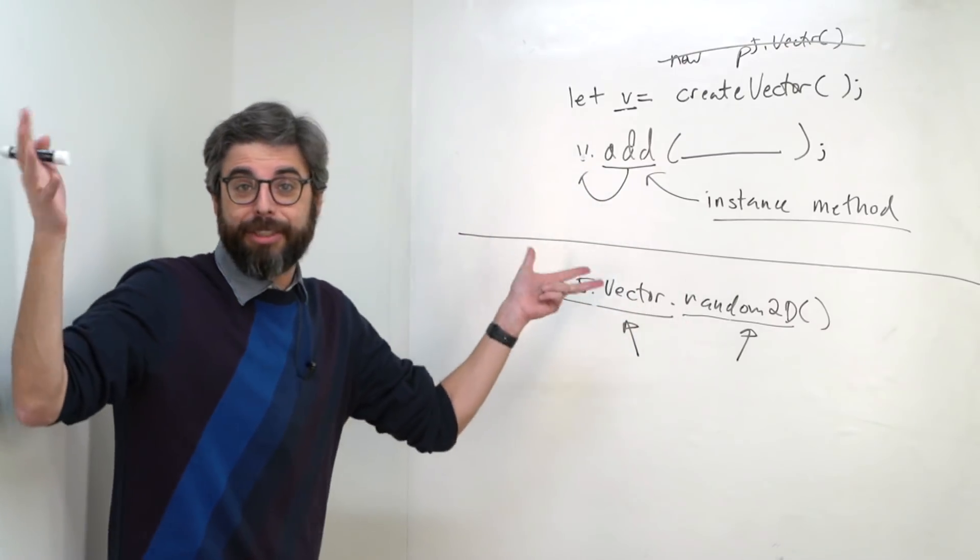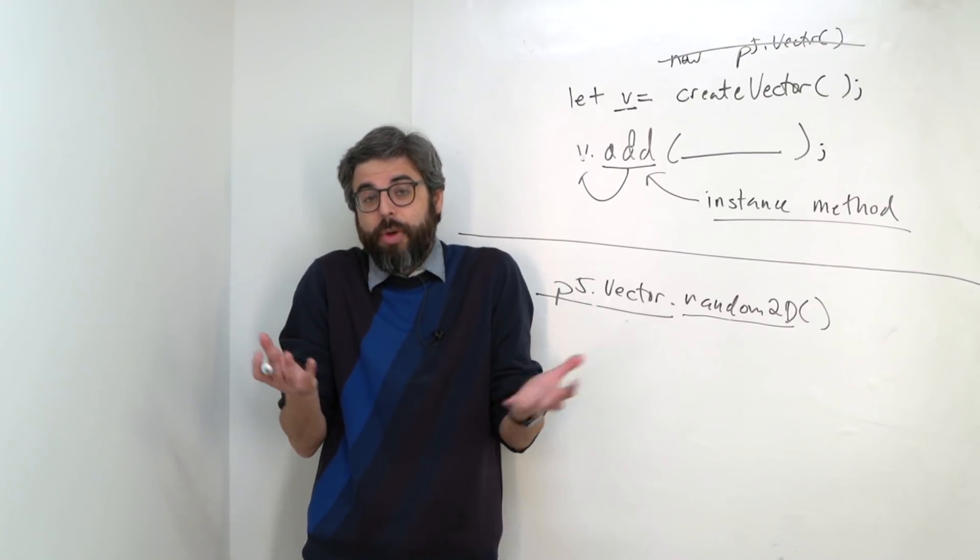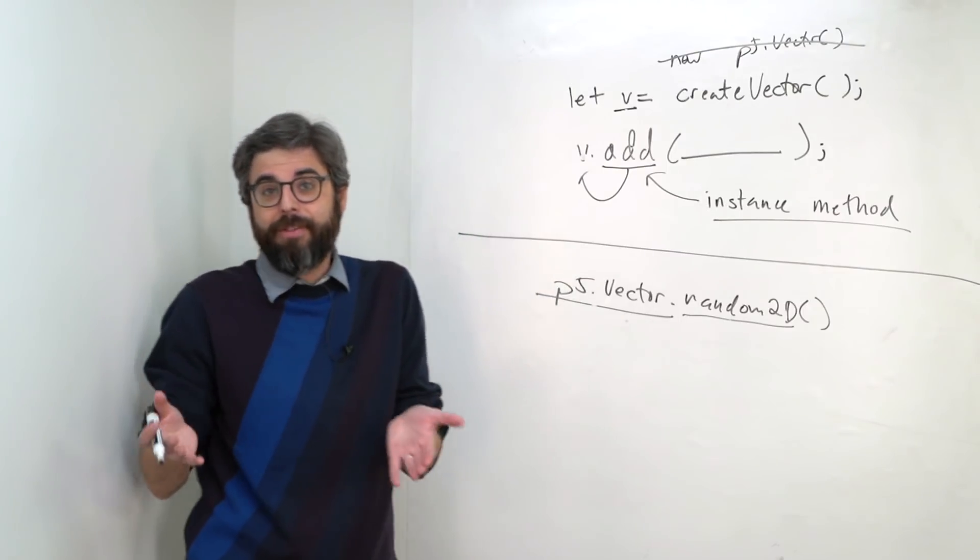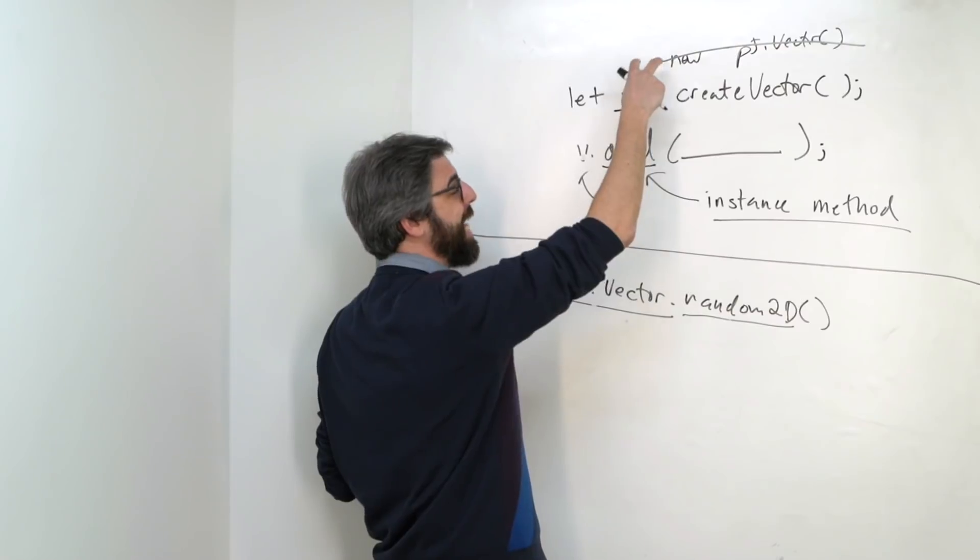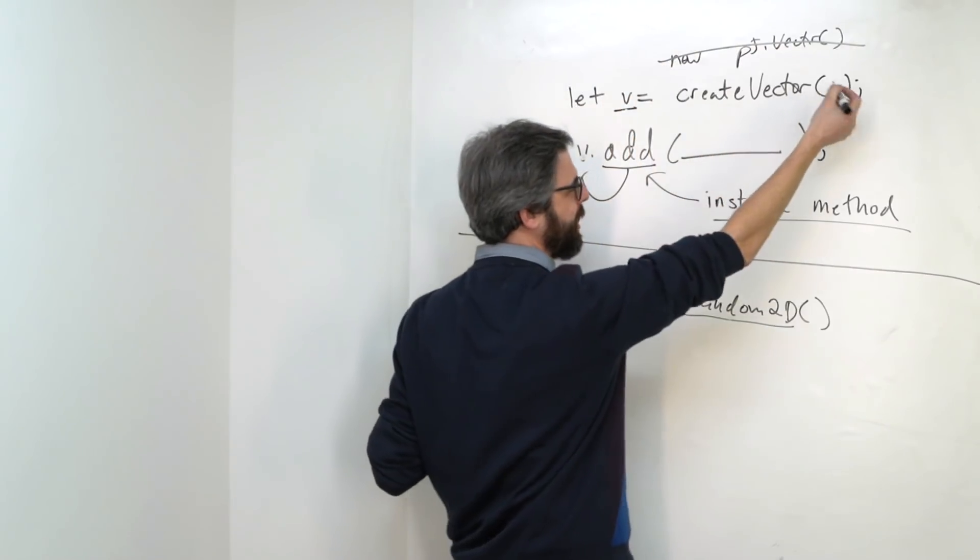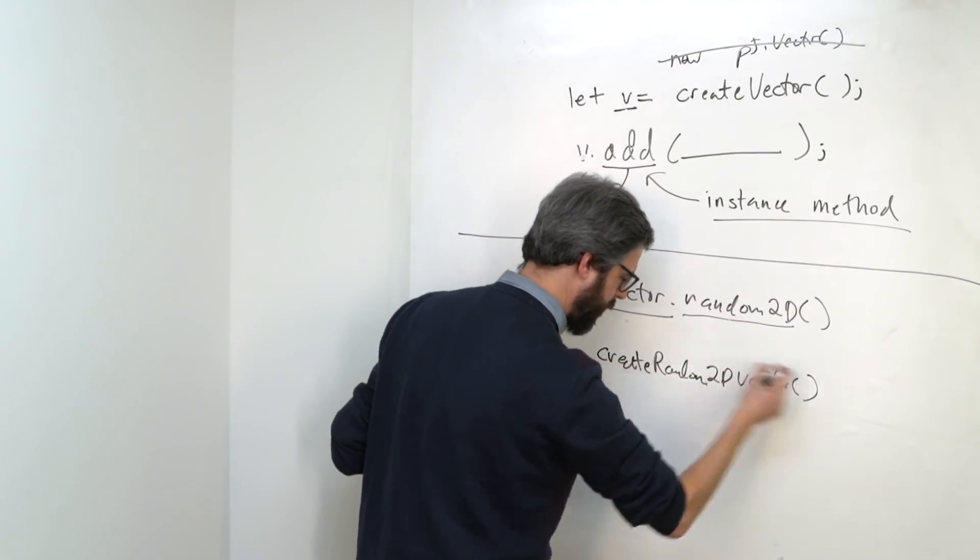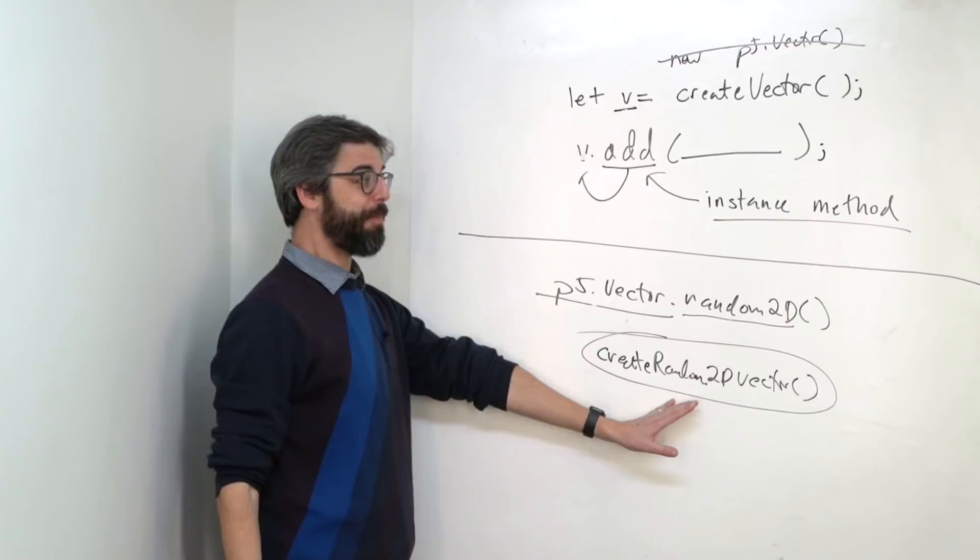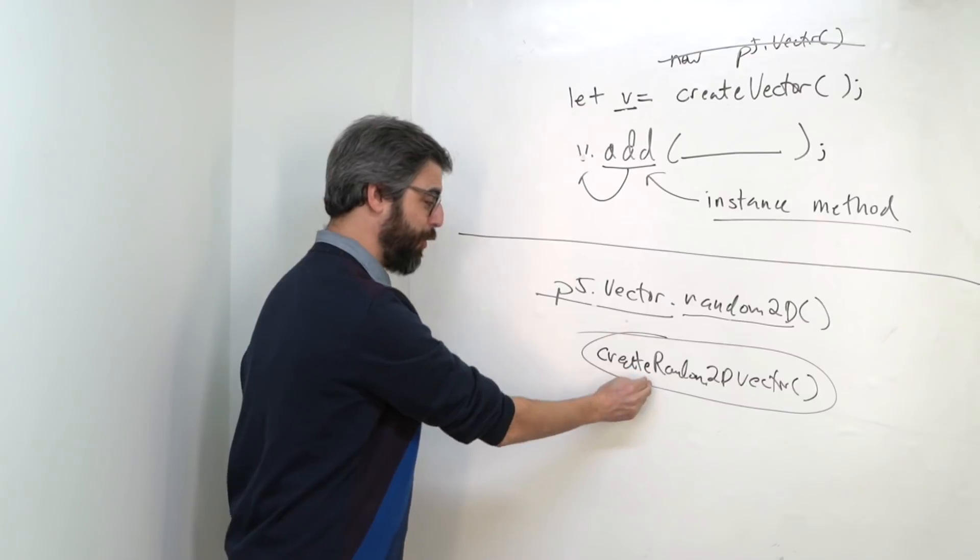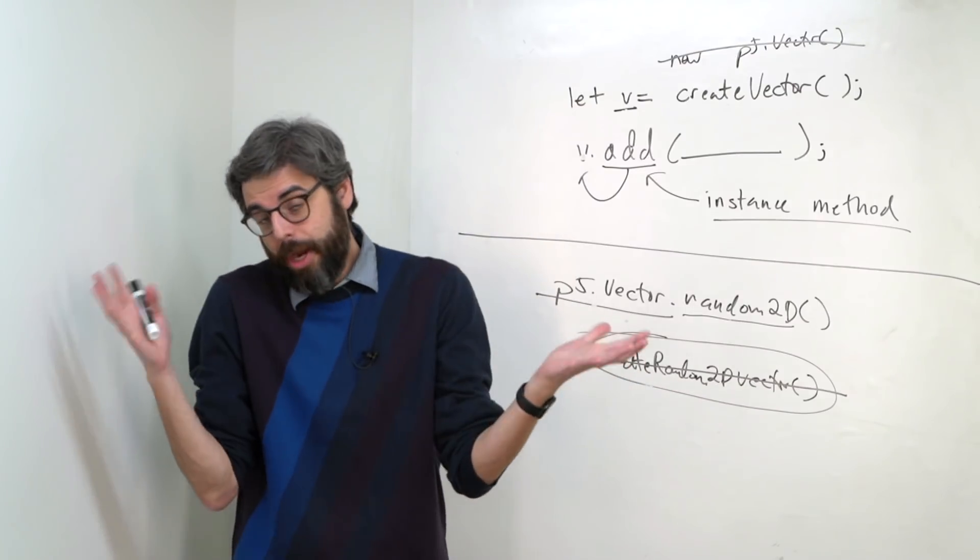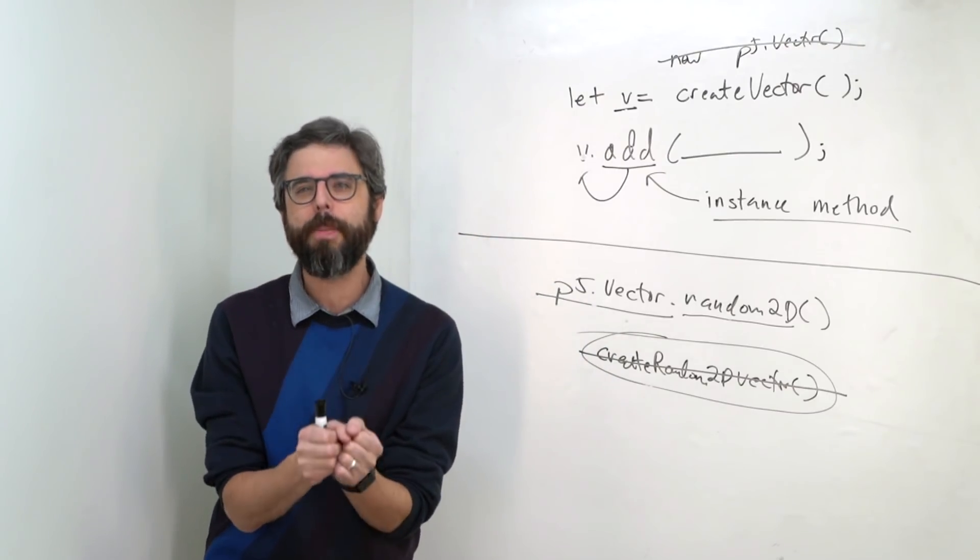So this begs the question, why is it done this way? The story here is that this is really a decision that the creators or maintainers of the p5 library have chosen. There's no reason why there couldn't be, just like there is a global create vector function that makes a empty vector or vector with 0,0 in it, there could be a create random2d vector. So this could be, I could be sitting here in an alternate parallel universe saying, this is the function to make a random2d vector in p5. But in JavaScript or in other programming languages as well, it's quite common to want to collect a whole set of functions under a particular namespace.